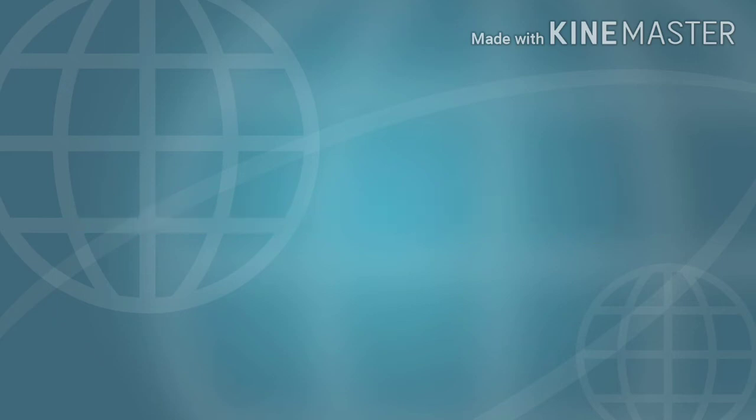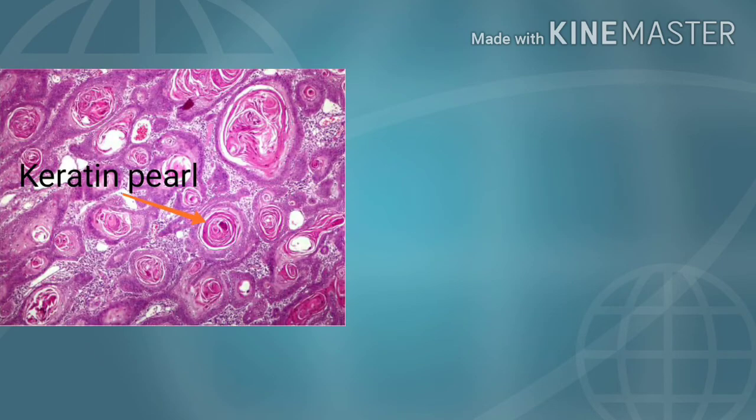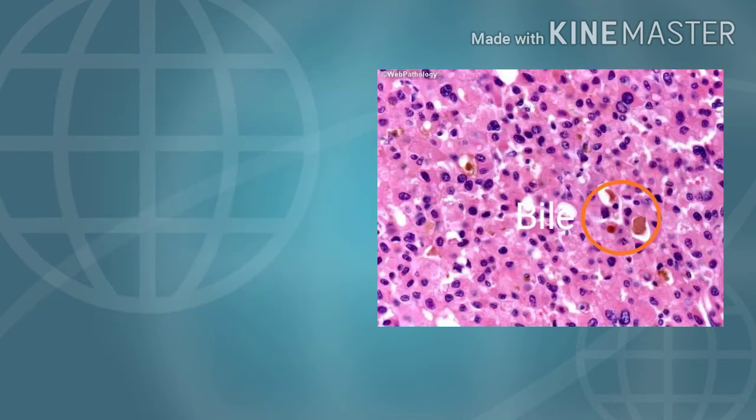For example, a well-differentiated squamous cell carcinoma of epidermis produces keratin, and a well-differentiated hepatocellular carcinoma synthesizes bile. So cells having mild anaplasia can function partly like the normal cells.